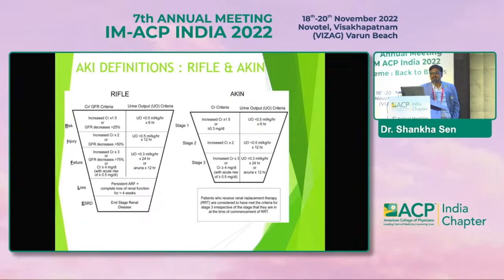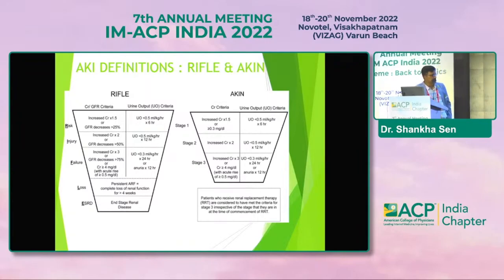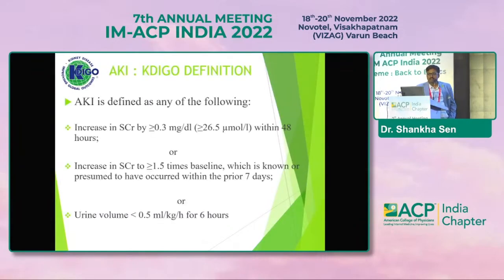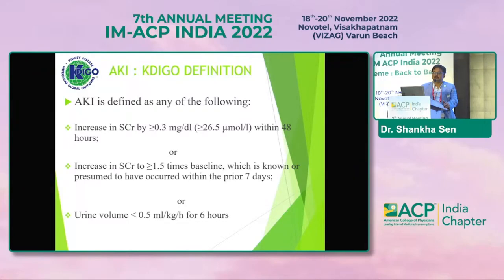Multiple AKI definitions exist. We have the RIFLE classification which involves Risk, Injury, Failure, Loss, and ESRD, and the AKIN classification with stages 1, 2, and 3. AKI is mainly defined as an increase in serum creatinine of more than or equal to 0.3 mg/dL within 48 hours of onset, or if it is more than 1.5 times the baseline.